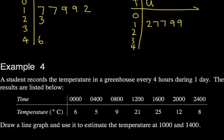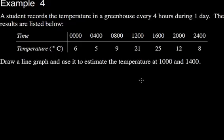Okay, I think we've got enough time to quickly have a look at example four. So a student records the temperature in a greenhouse every four hours during one day. The results are listed below. Here we go. Right, so we've got different times here. It's a 24-hour clock. It goes all the way up to midnight. It starts at midnight as well. And the temperature seems to rise and then fall.